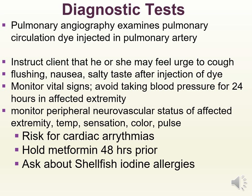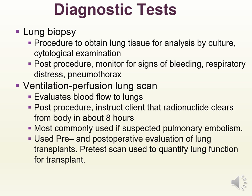Pulmonary angiography examines pulmonary circulation by injecting dye into the pulmonary artery. The client may feel an urge to cough during the procedure and may feel flushing, nausea, or a salty taste after dye injection. Monitor vital signs and avoid taking blood pressure in the extremity used for at least 24 hours. Monitor peripheral neurovascular status including temperature, sensation, color, and pulse of the affected extremity. The patient may be at risk for cardiac arrhythmias. If the patient is taking metformin, hold it for at least 48 hours prior to the procedure. Question the patient about shellfish and iodine allergies before dye injection.